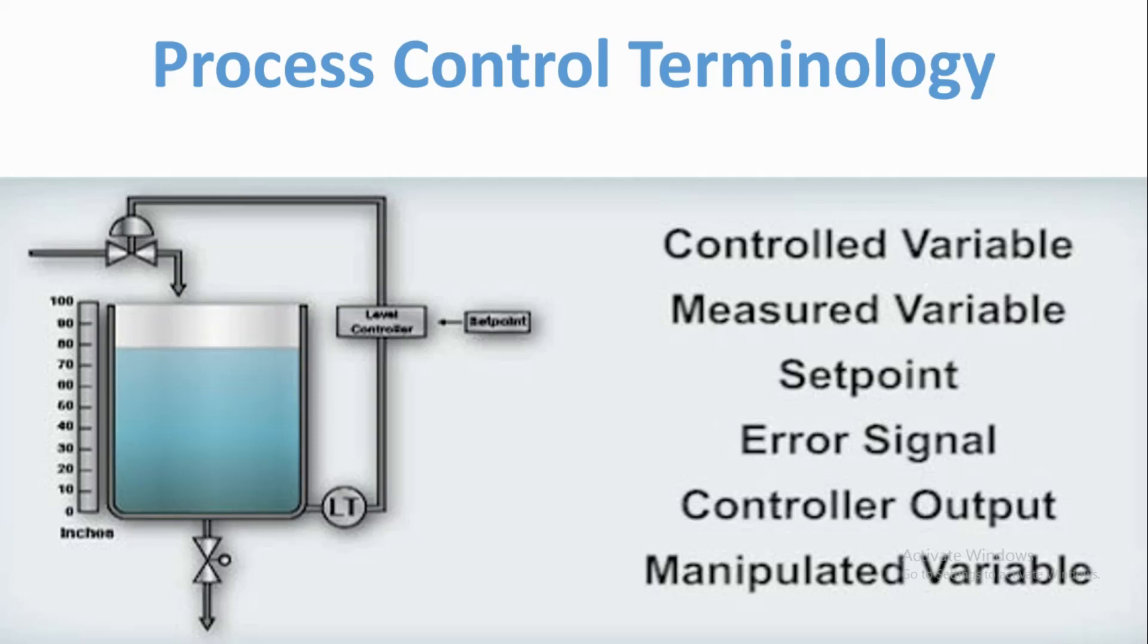The various components that make up a control system are seen in the diagram. Each of these components has its own characteristics, and a change in any single component will change the overall response of the control loop.